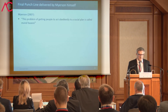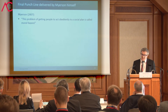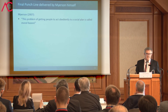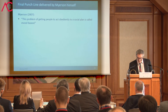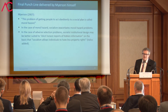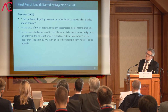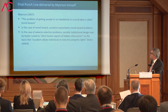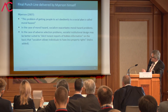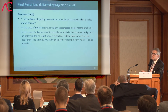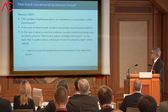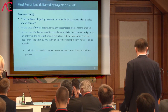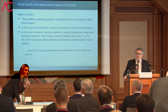The final point is a punch line. Myerson said in 2007 that the problem of getting people to act obediently to a social plan is called moral hazard — I find that quite incredible, and you can see where they're coming from. Then comes the best part: in the case of moral hazard, socialism exacerbates moral hazard problems — so he sees that the market can do something good. But then he says in the case of adverse selection, socialist institutional design may be better suited to elicit honest reports of hidden information, on the basis that socialism allows individuals to have fewer property rights. So what he's saying is: people become more honest when you make them poorer.